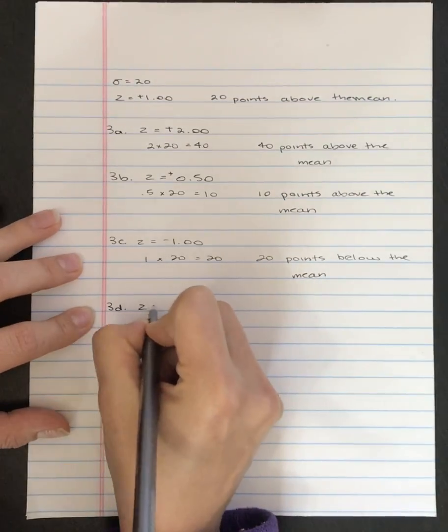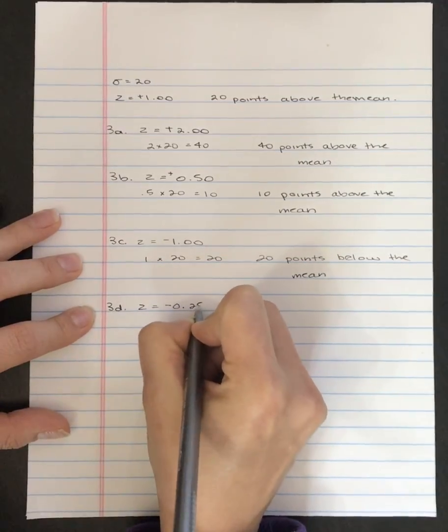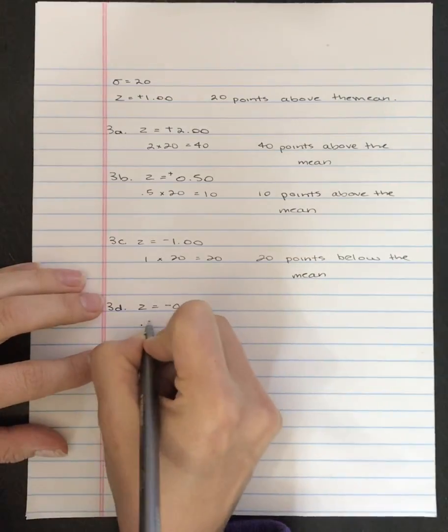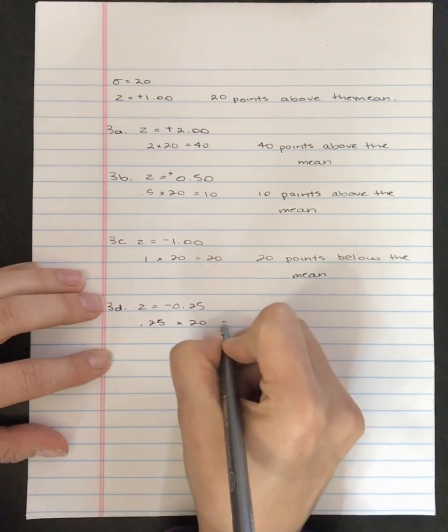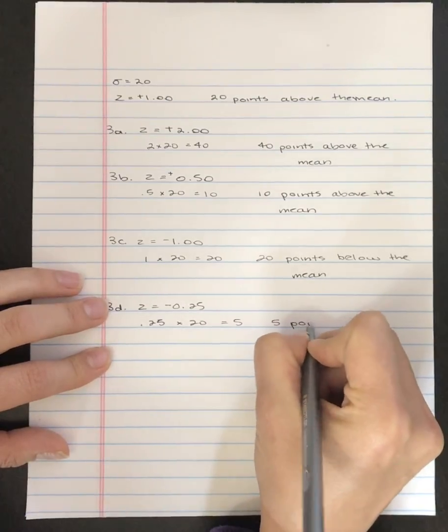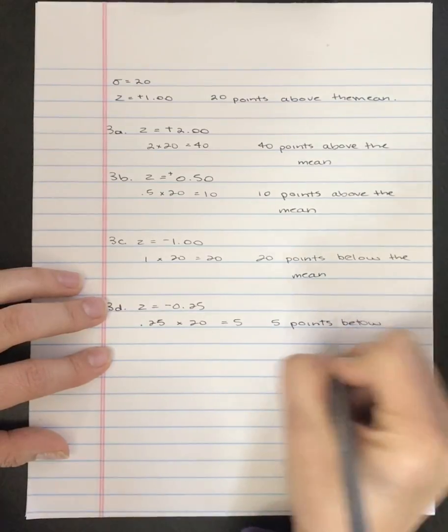3d, the z-score equals negative 0.25. So 0.25 times 20 equals 5. And so this is 5 points below the mean.